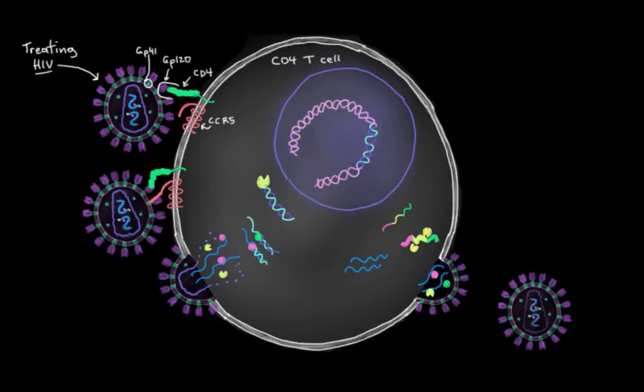And then these proteins that are on both of them start to shake hands, you could call it. And because of this little handshake that they have going on, this secret handshake, the HIV fuses with the CD4 cell, and it kind of injects its genetic material and its enzymes into your cell.